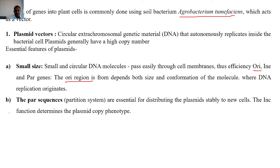The PAR gene sequence: the partition system is essential for distributing the plasmid stably into new daughter cells during cell division. When one cell divides into two, the partition system distributes the plasmid copies to each new cell. There are multiple copies maintained. Then there is the INC gene — this gene is determined by the plasmid copy number phenotype, determining how many copies of the plasmid exist per cell.